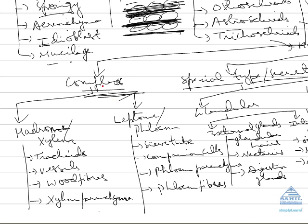Complex permanent tissue contains different types of simple permanent tissues together. Xylem, also called hydromel, contains different cell types. Tracheids are non-conducting in angiosperms but are the conducting elements in gymnosperms. Xylem vessels are absent in gymnosperms but present in angiosperms. Wood fibers are completely lignified dead fibers found in xylem, providing mechanical strength.